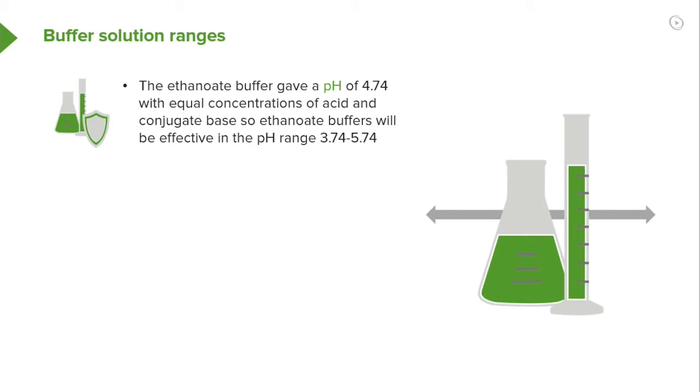The acetic acid or ethanoate buffer gave a pH of 4.74 with equal concentrations of acid and conjugate base, so ethanoate buffers will be effective in the pH range of 3.74 to 5.74.